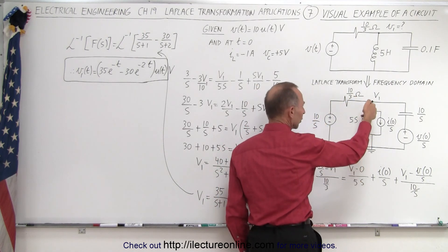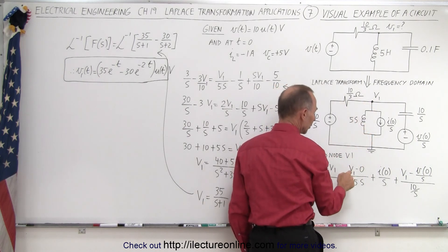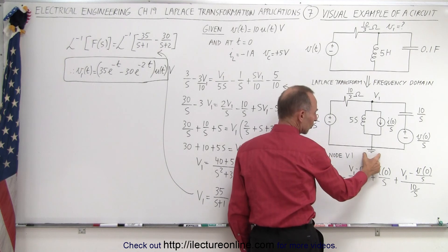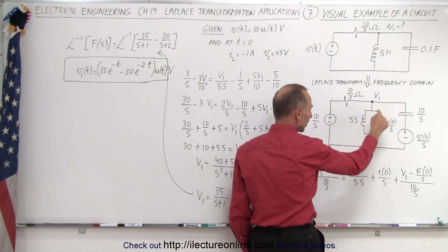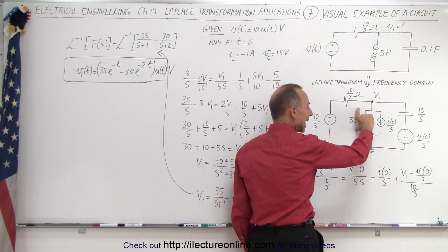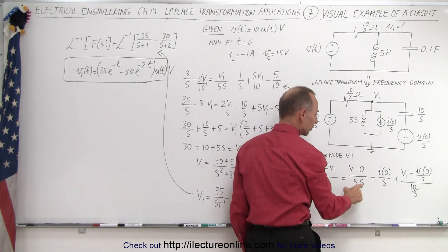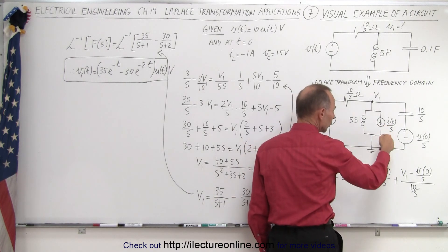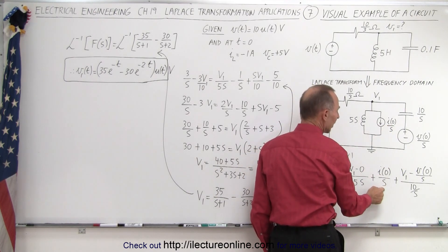Here we have the current through the inductor, which is the voltage difference between here and here. Since this is grounded at 0 volts, it's V1 minus 0 divided by the reactance of the inductance in the frequency domain. Then here we're taking the initial current at time equals 0 divided by S.